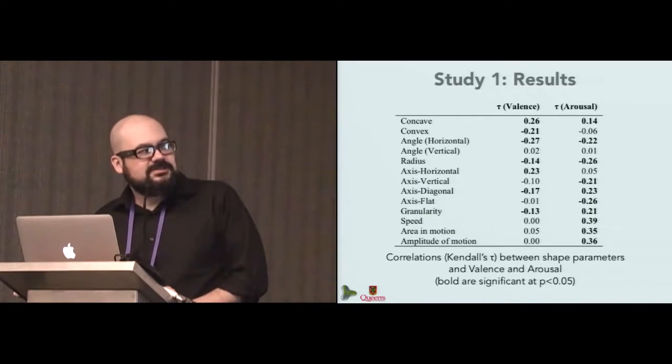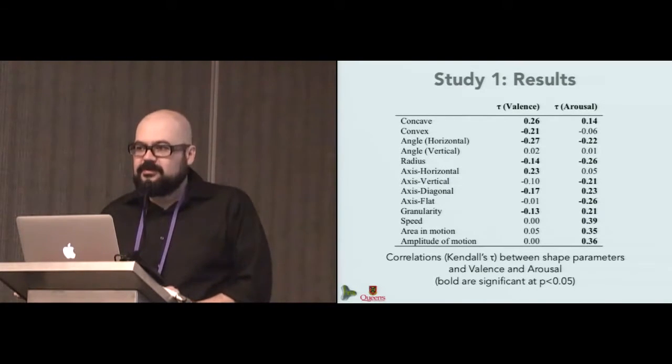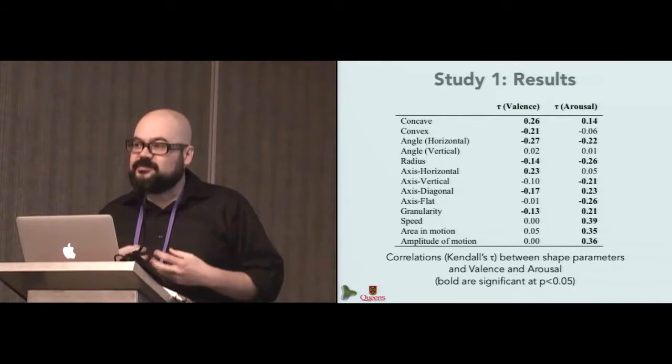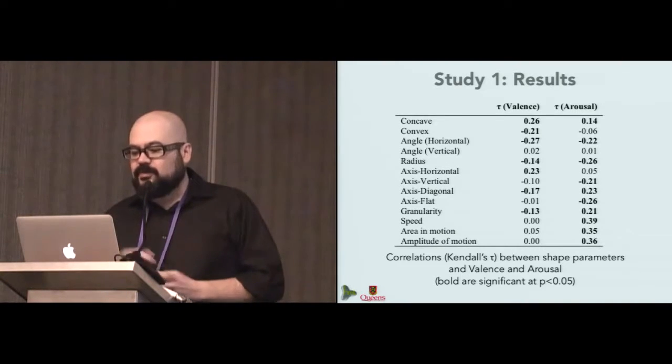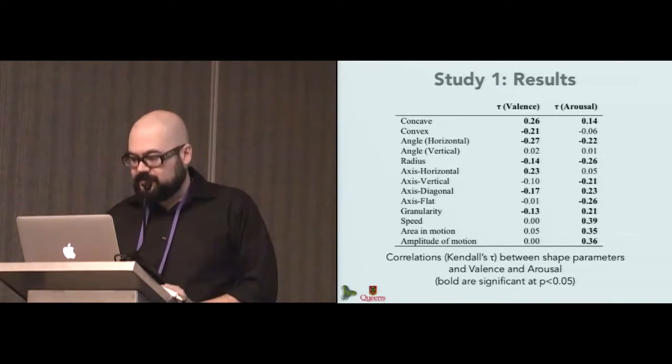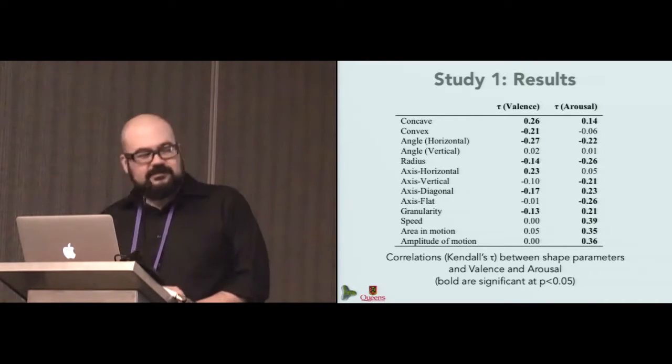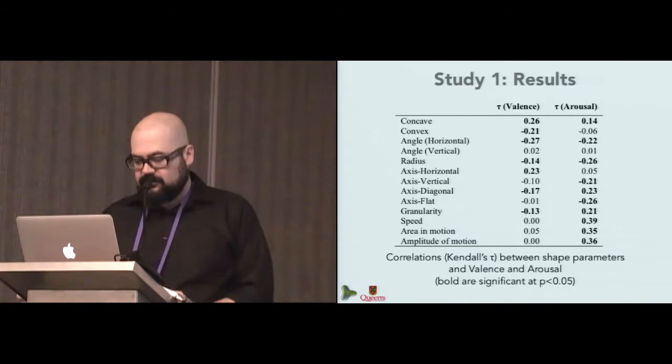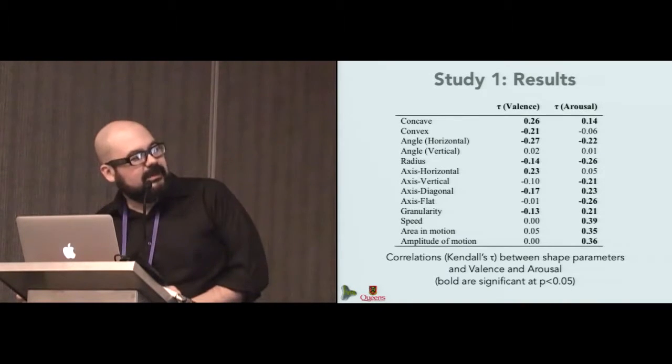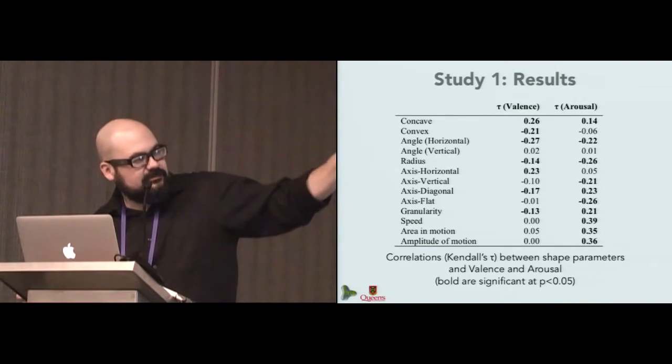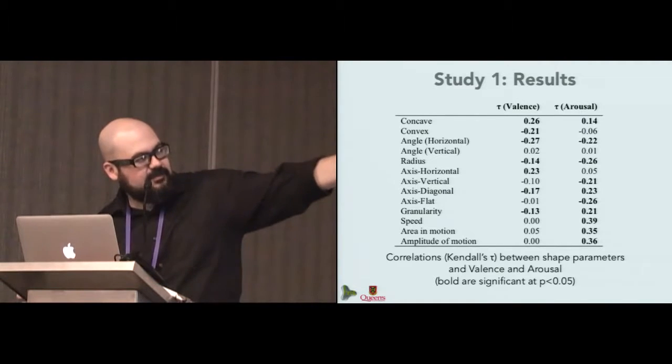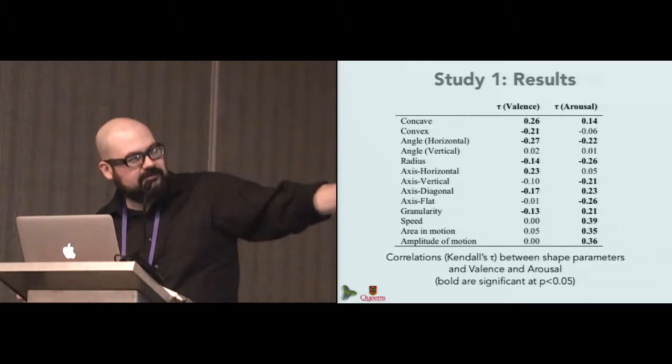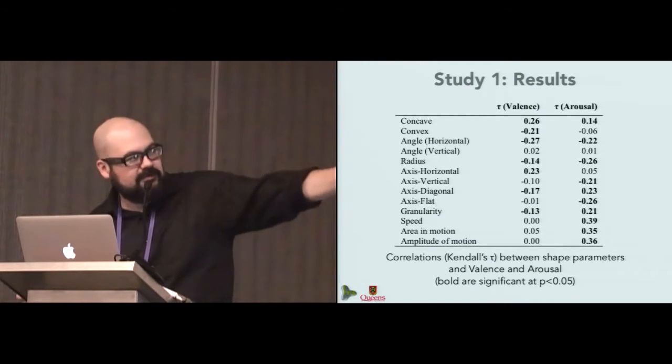We also evaluated the correlations between the shape parameters as extracted from the sensor data and with the emotion parameters. We found that there were some correlations. Those that are involved there were significant with a p-value under 0.05. And you can observe that there are several correlations in terms of shape, static shape for valence, some for arousal. And the dynamic shape parameters were highly correlated or more correlated to arousal.